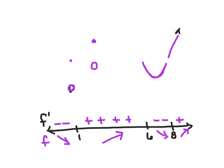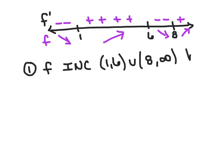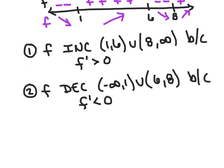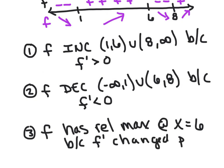Now that we've got the sign chart, we can determine all the information we need. When is f increasing? f is increasing from 1 to 6 and 8 to infinity because f' is positive. When is f decreasing? f is decreasing from negative infinity to 1 and also from 6 to 8 because f' was negative. Do we have any relative maximum values? It looks like there's only one, at x equals 6, because f' changed from positive to negative.